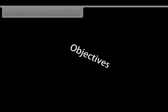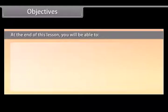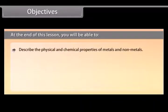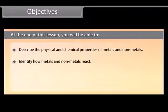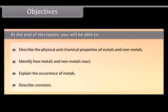Objectives. At the end of this lesson you will be able to describe the physical and chemical properties of metals and non-metals, identify how metals and non-metals react, explain the occurrence of metals, and describe corrosion.